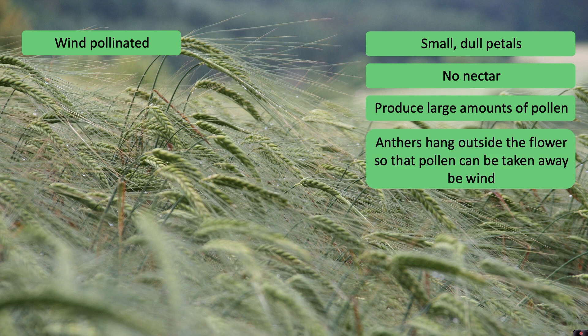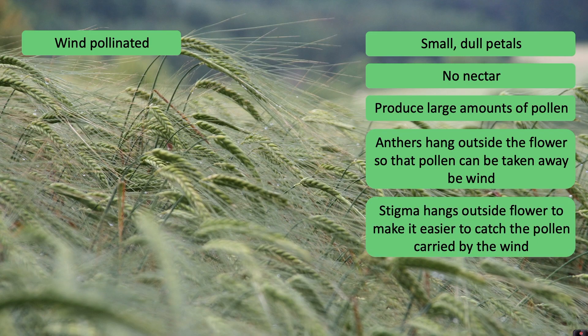The anthers hang outside the flower so that the pollen can be taken away by the wind. Similarly, the stigma hangs outside the flower to make it easier to catch the pollen carried by the wind.